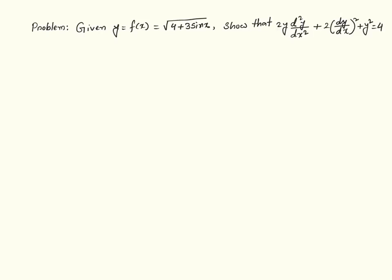In this video, I am going to solve this problem. We are given y is equal to f of x, which is equal to square root of 4 plus 3 sine of x. We need to show that 2y times the second derivative of y plus 2 times the first derivative of y whole square plus y square is equal to 4.